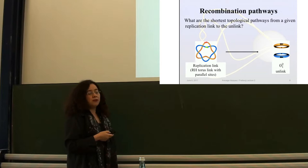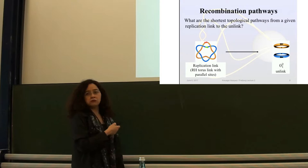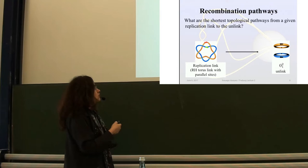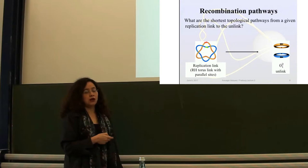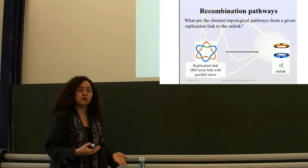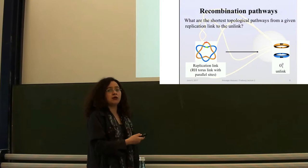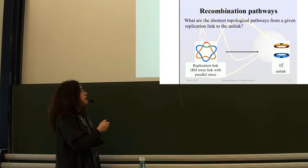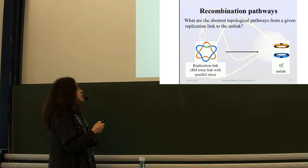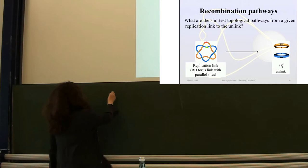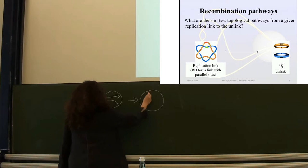Here are the two big questions. First: if I start with a torus link — a 2N-crossing torus link — I know that this link goes to the unlink. What are all the pathways to get there? In particular, what are the shortest pathways to get from a 6-crossing or 2N-crossing torus link to the unlink? How many steps are needed? It's a right-handed torus link with parallel sites and positive crossings. If you flip one of the arrows, you could go from the link directly to the unknot in one step. But that's not what these enzymes are doing because the orientation is wrong.